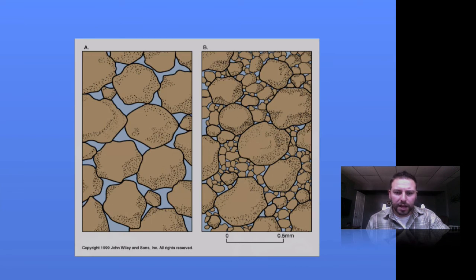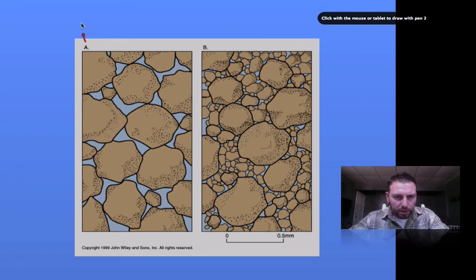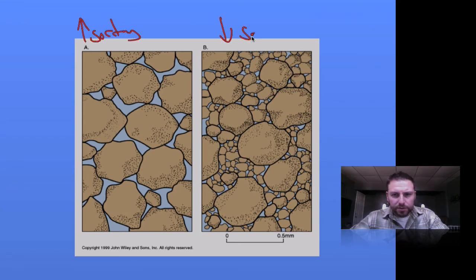Sorting has an effect on our porosity. Take a look at this diagram—more sorting going on here. On the left, this is increase in sorting. Decrease in sorting over here, which also decreases our porosity.